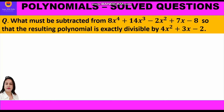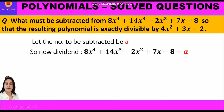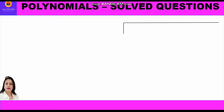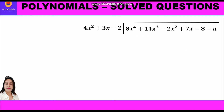So, let us assume the number to be subtracted is a. The new dividend becomes 8x⁴ plus 14x³ minus 2x² plus 7x minus 8 minus a, and the divisor remains 4x² plus 3x minus 2. Let us set up our problem: the divisor 4x² plus 3x minus 2 comes outside, and the dividend 8x⁴ plus 14x³ minus 2x² plus 7x minus 8 minus a comes inside.